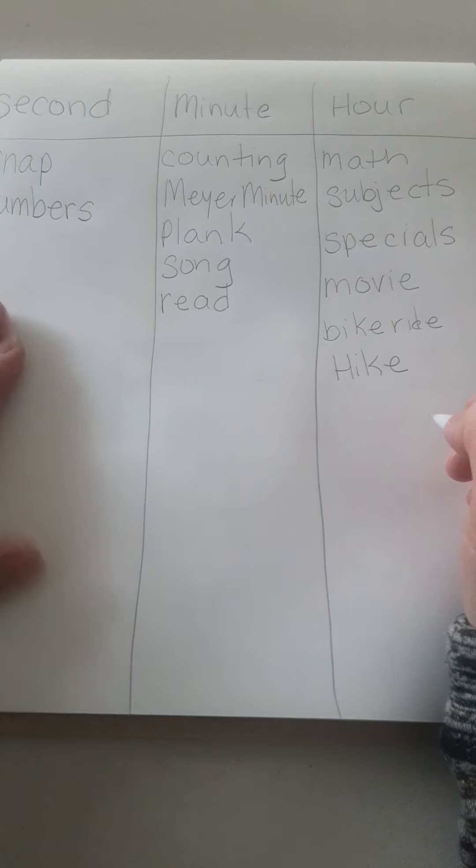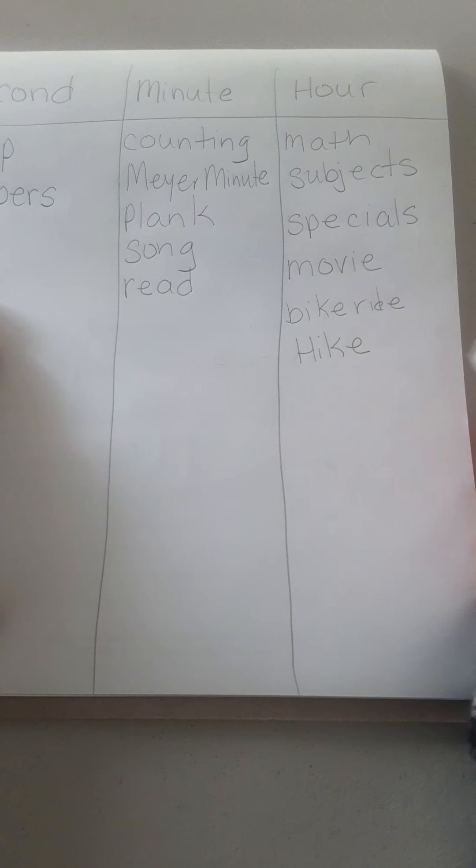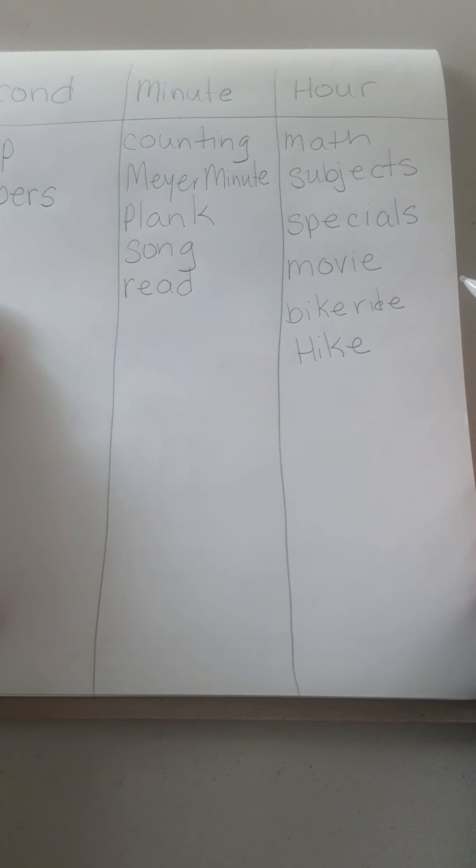A minute, or a second rather, is really quick. A minute, think about our Meijer minute at school. An hour, think about the different subjects we're in. Or when you're at PE and music, that is also an hour.